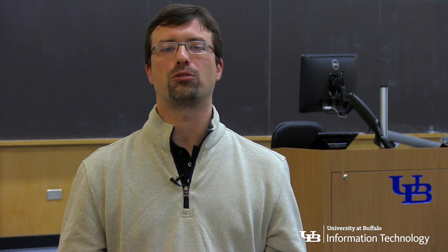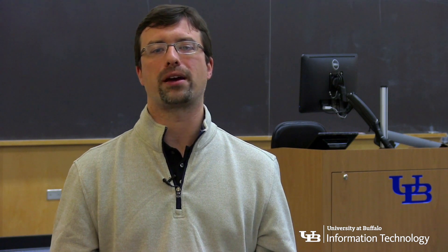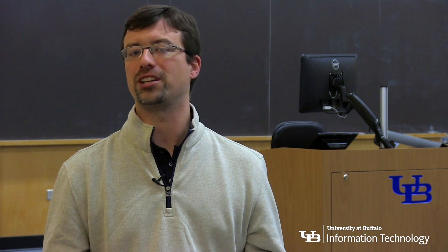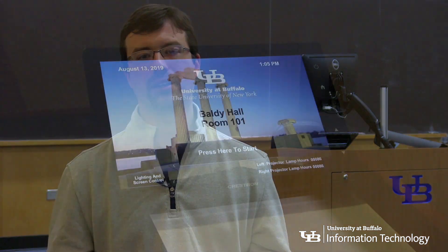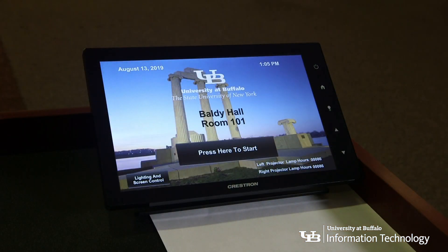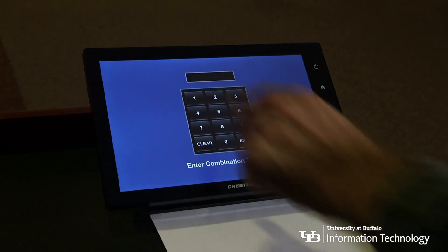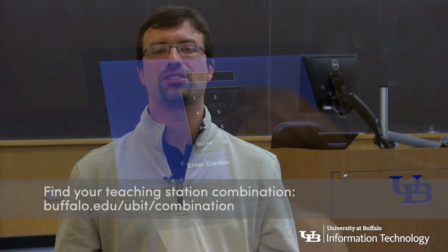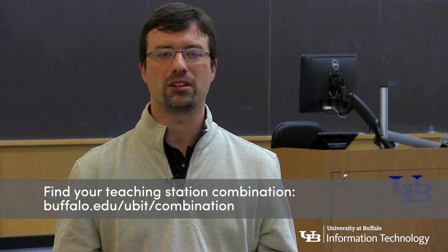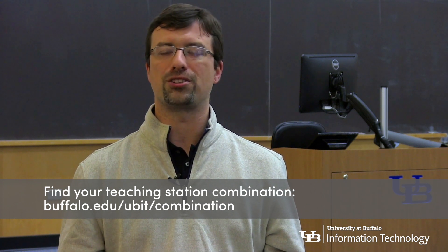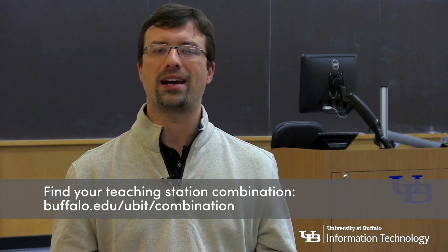The teaching stations are controlled by a touchscreen panel at the top of the teaching station cabinet. To begin, tap the button that says 'press here to start.' You'll need to unlock the teaching station with a six-digit combination. You can look up your classroom's combination on the UBIT website.